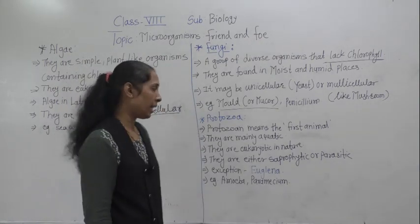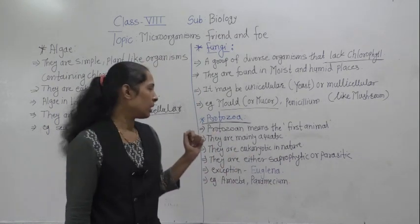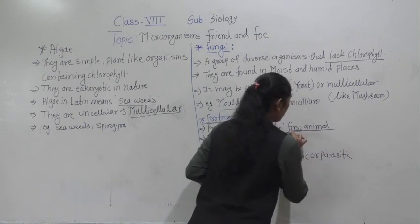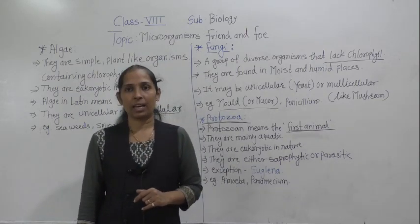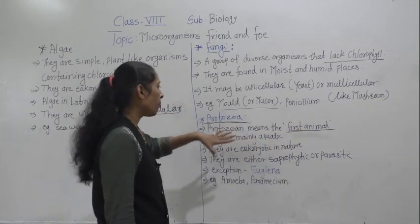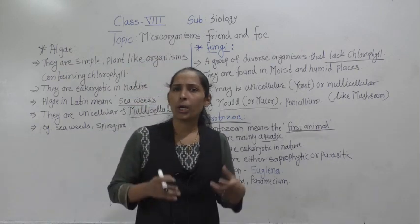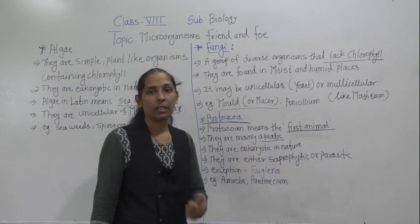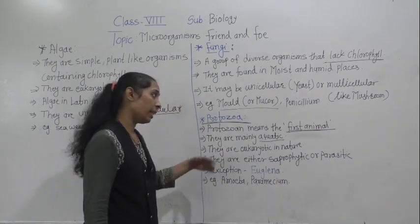The next and last major group of microorganisms is protozoa. The word protozoa means 'first animal.' Protozoa are mainly aquatic — they are found in ponds, lakes, rivers, or in humid and damp soil. They are also eukaryotic in nature, with a well-developed nucleus.